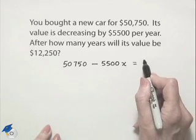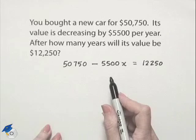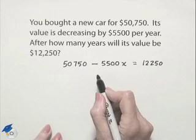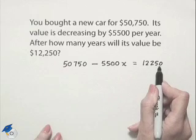We want to figure out when that value would be $12,250. We're now going to take this equation and solve for x. To do so, we're going to subtract $50,750 from both sides of the equation.